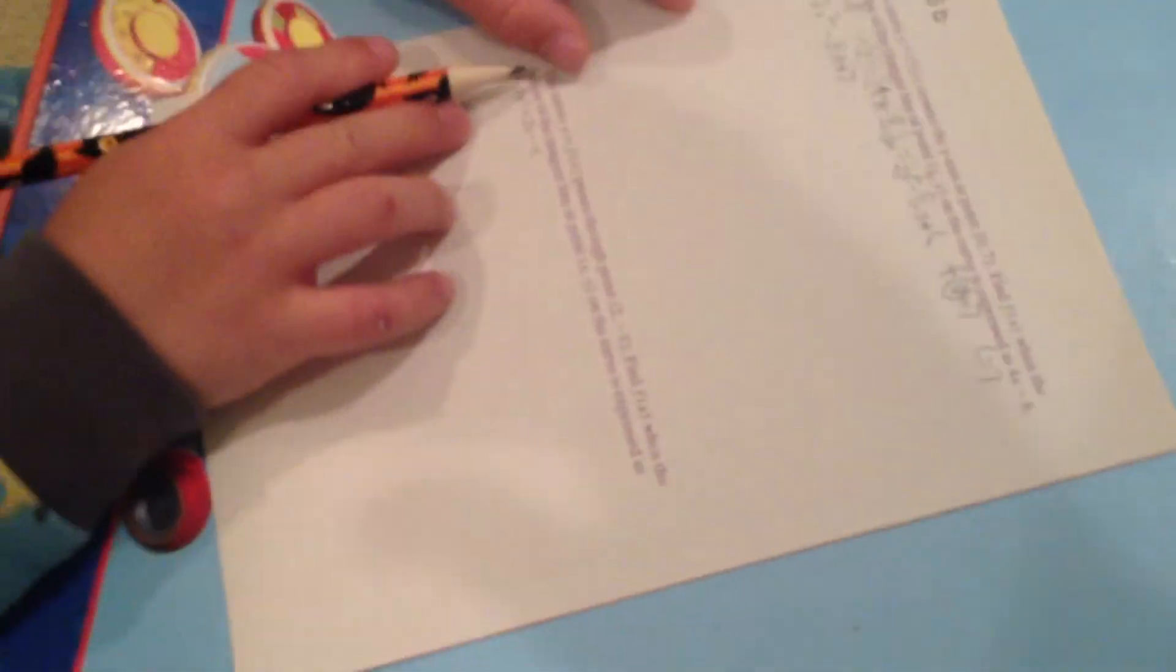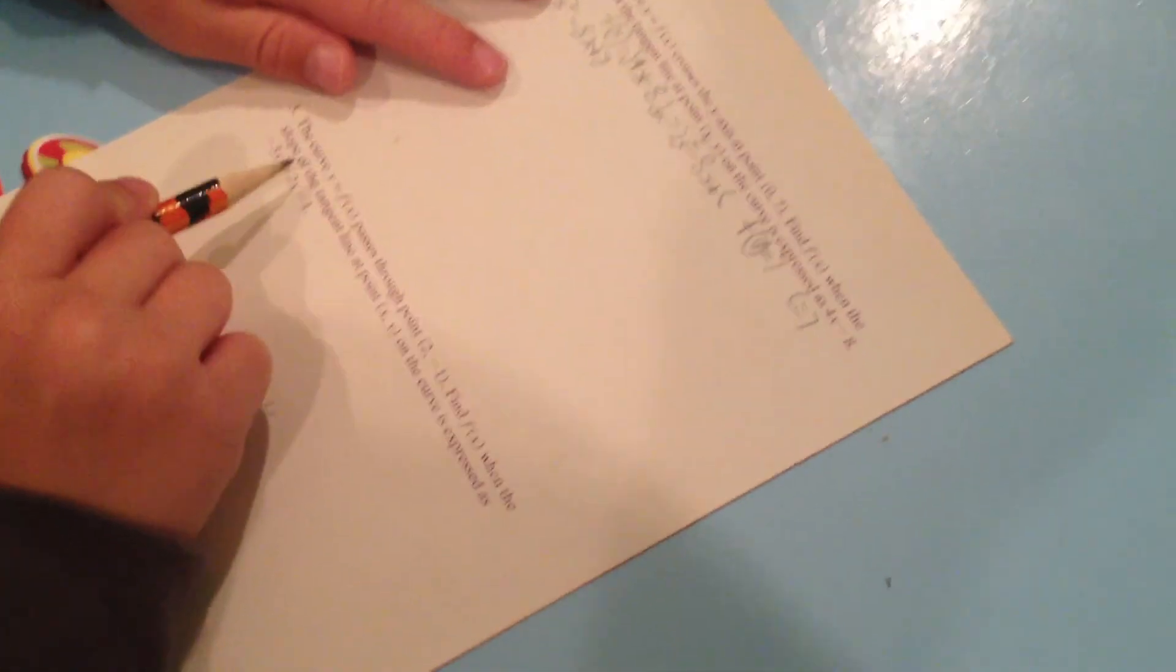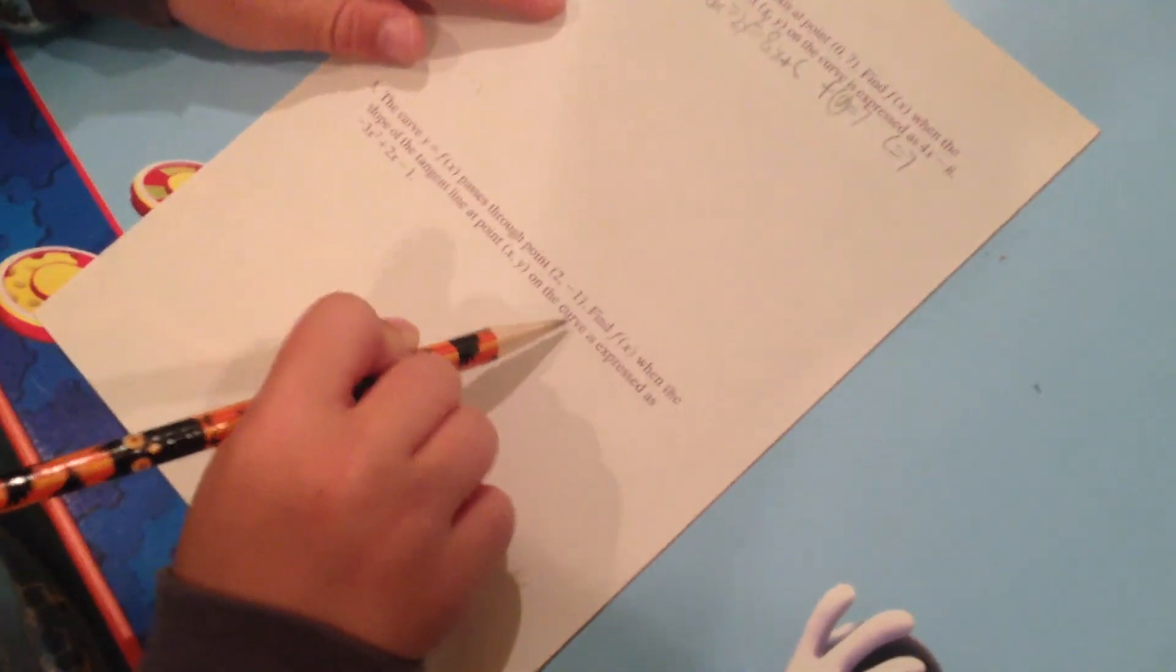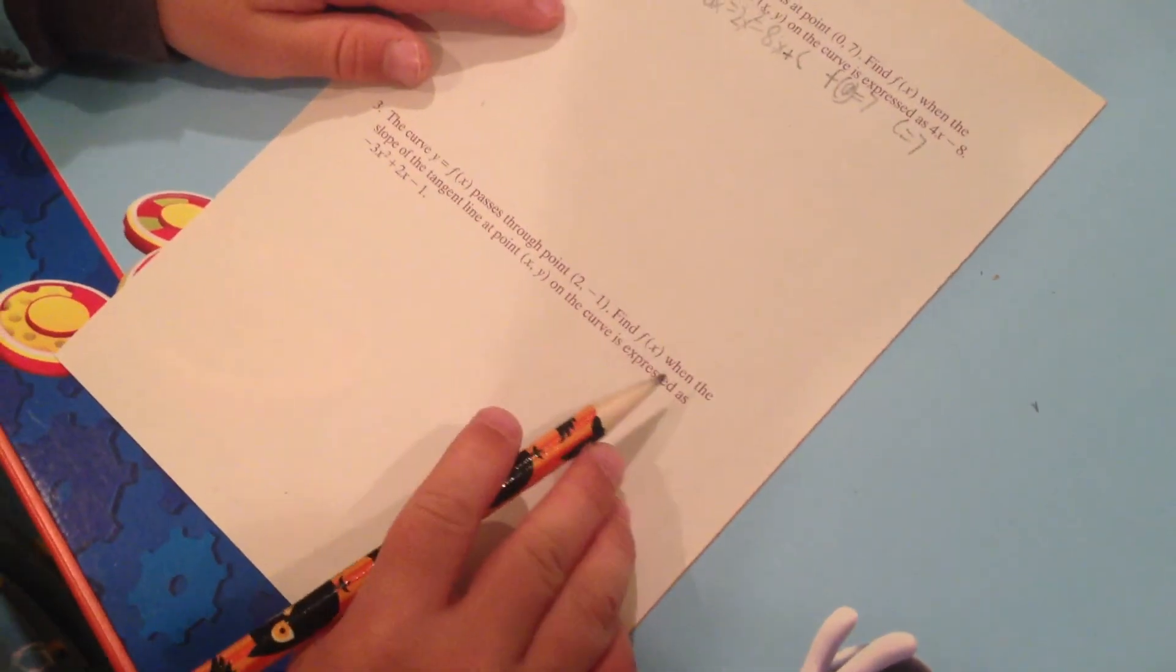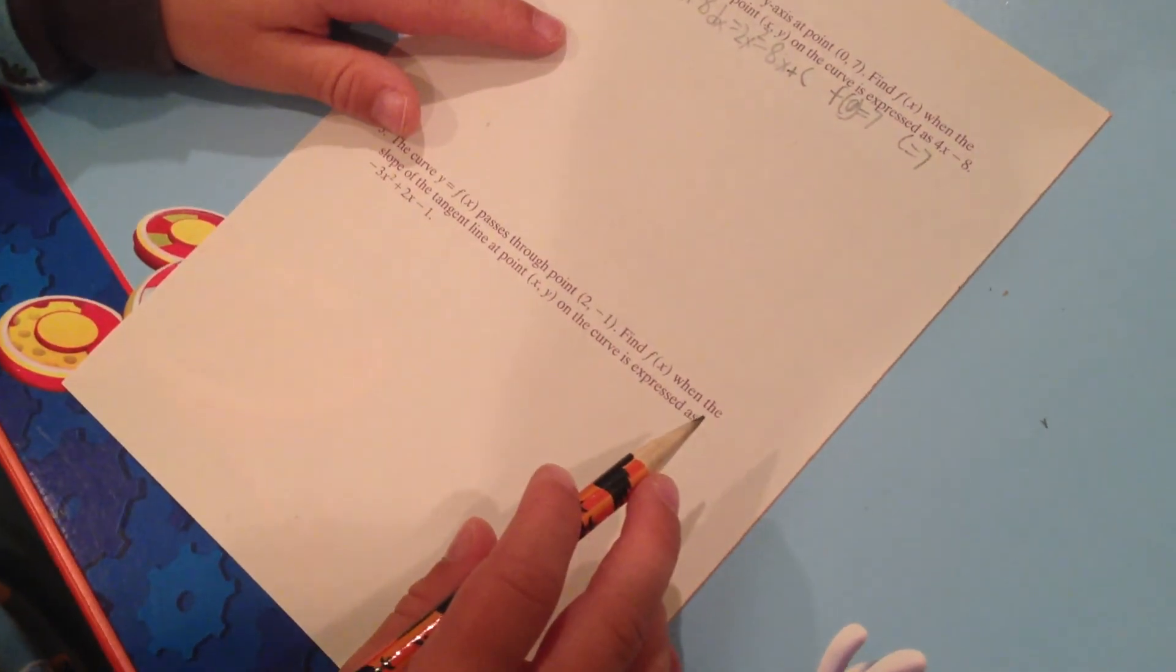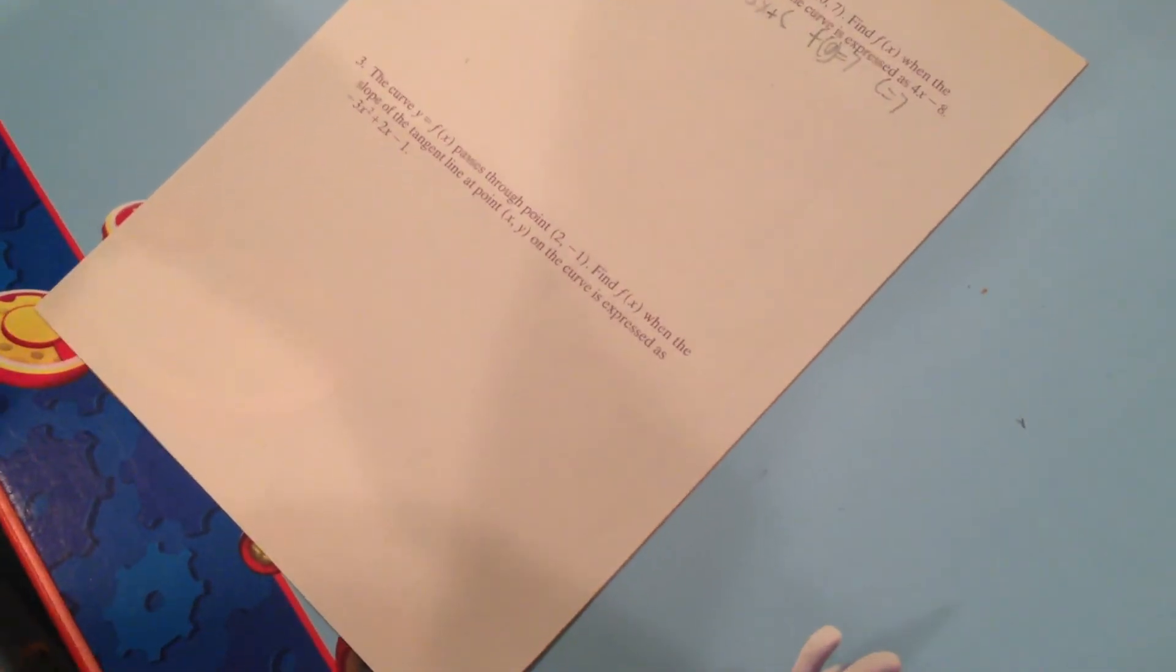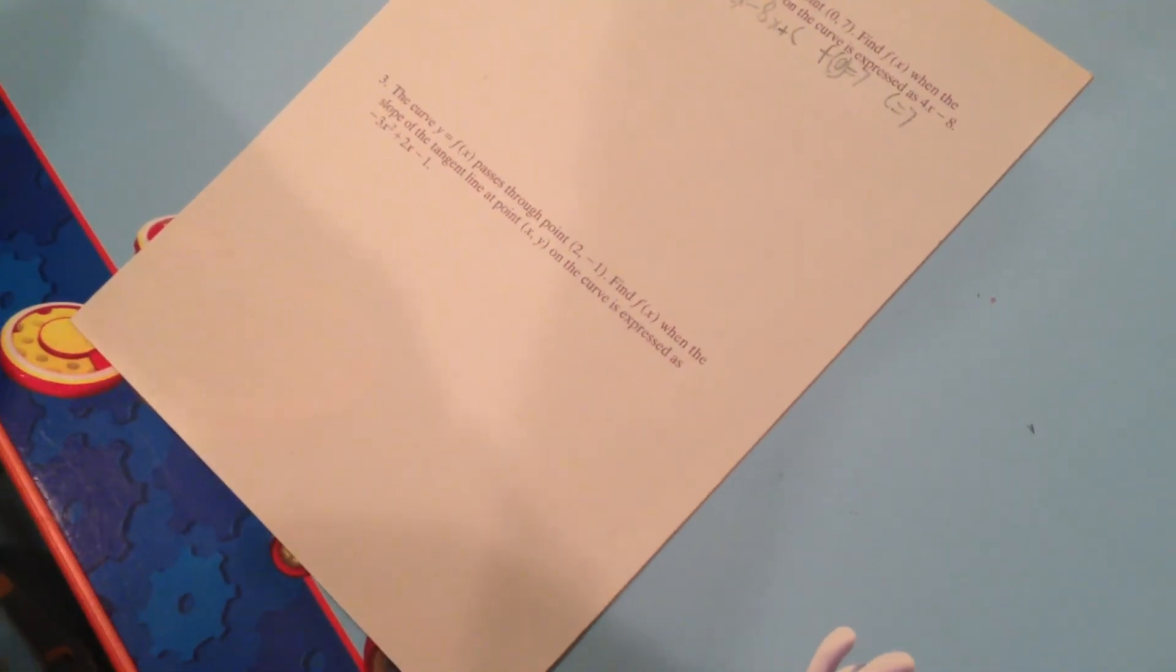Let's read it. I want number three. So on the next page, it's really interesting that you just told me that. The curve y equals f of x passes through point two comma negative one. Find f of x when the slope of the tangent line at point x comma y on the curve is expressed as negative three x squared plus two x minus one.